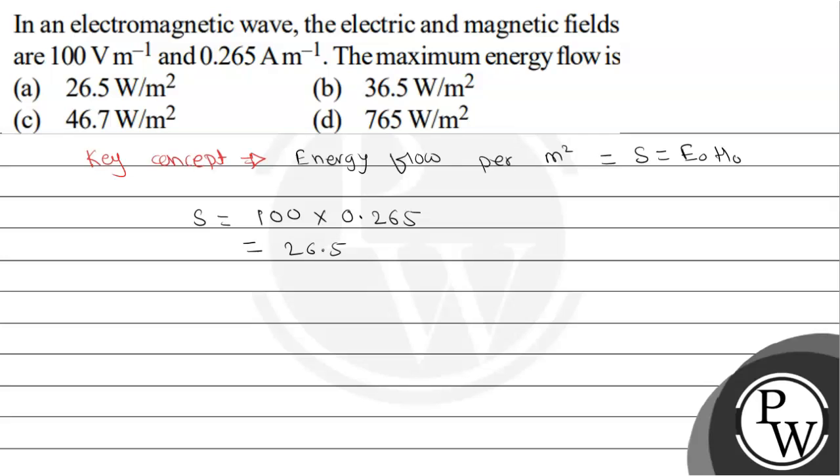So the correct answer is 26.5 watt per meter square, the maximum energy flow. Hope you understand it well, best of luck.